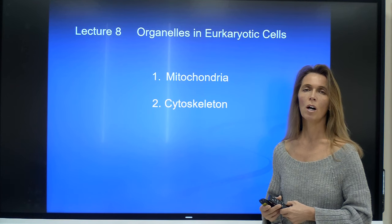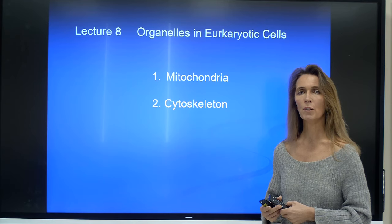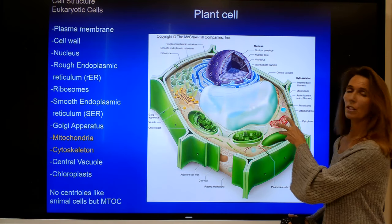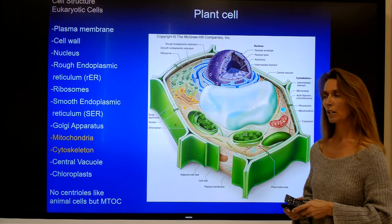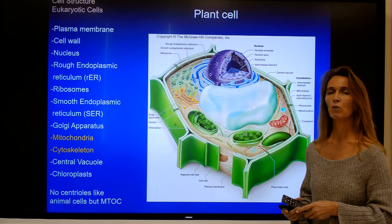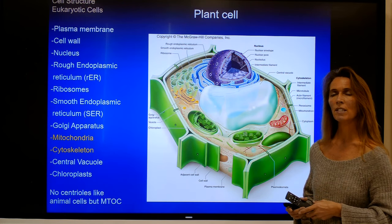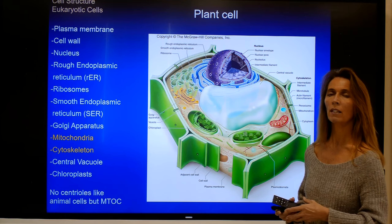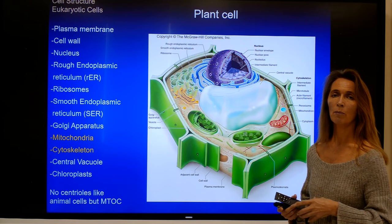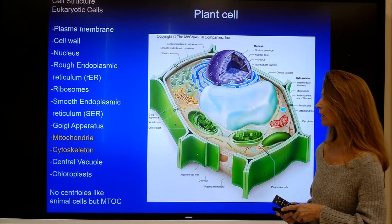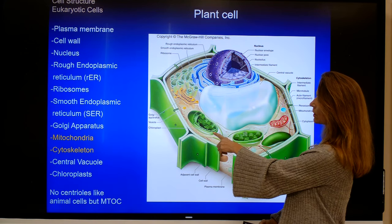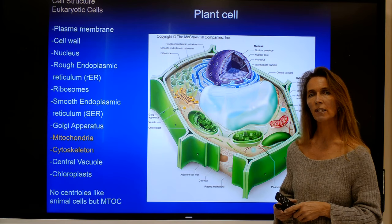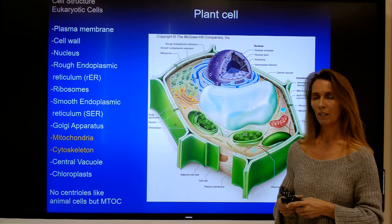Lecture number eight will continue to talk about organelles within eukaryotic organisms, covering mitochondria and the cytoskeleton. Mitochondria are located within eukaryotic organisms and are important for the synthesis of adenosine triphosphate, which is the energy currency within cells. Enzymes, for example, can readily utilize the energy stored in ATP and use it for metabolic reactions that they catalyze. The cytoskeleton consists of proteinous fibers or filaments located throughout the cytoplasm and extensions of cells, and has a number of different functions.